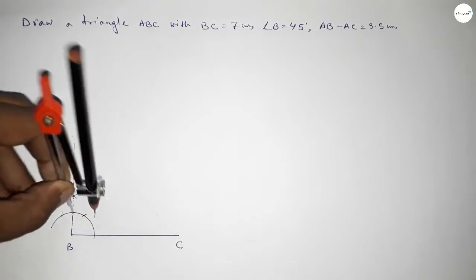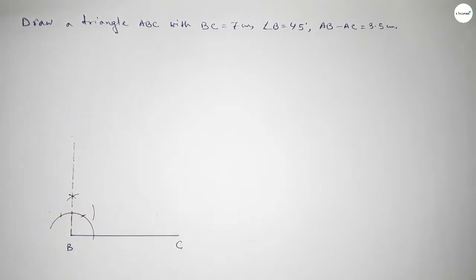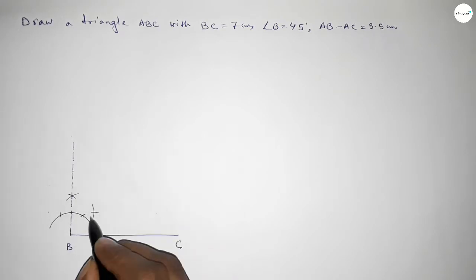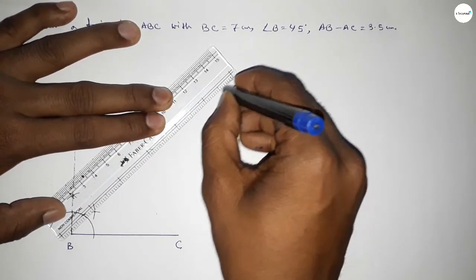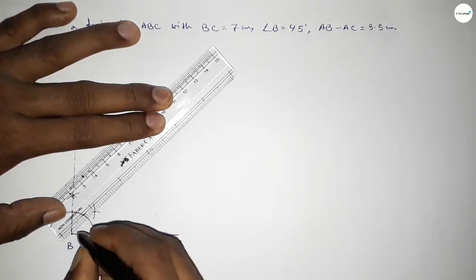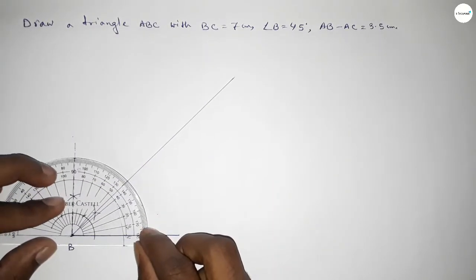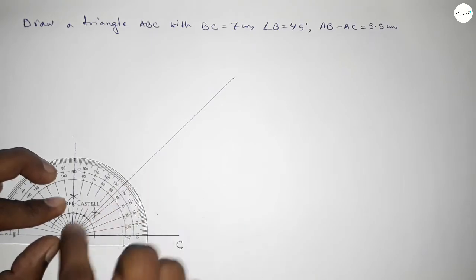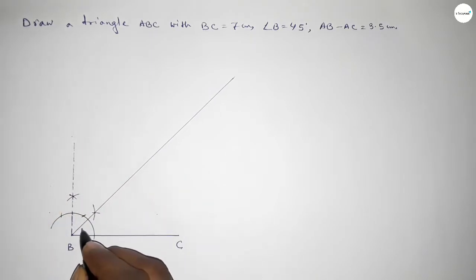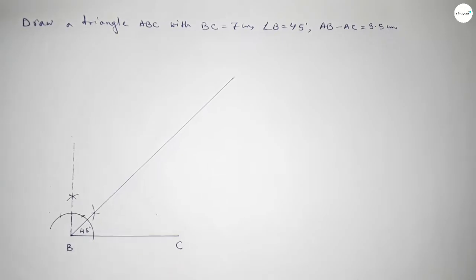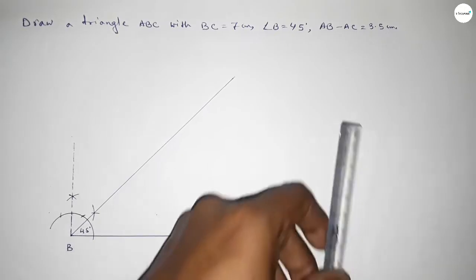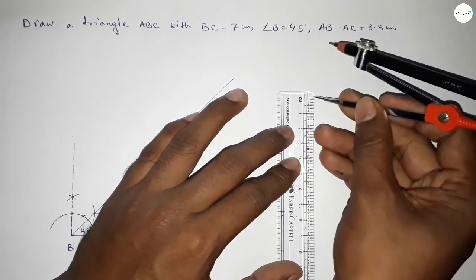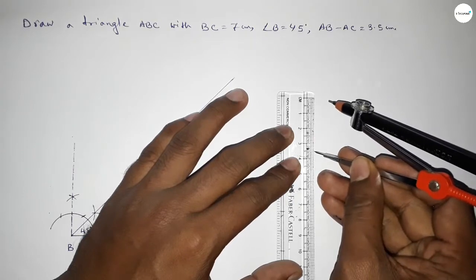With the same length, putting the compass here and drawing an arc, then putting the compass here and cutting here. Both curves intersect at a point — joining this to get a 45 degree angle. Now checking: this is 45 degrees. Perfect, so this is 45 degrees.